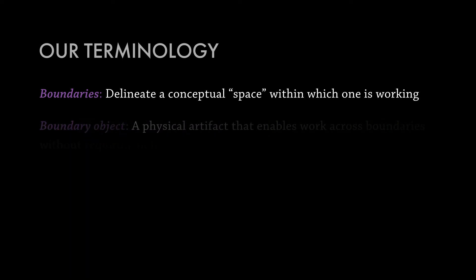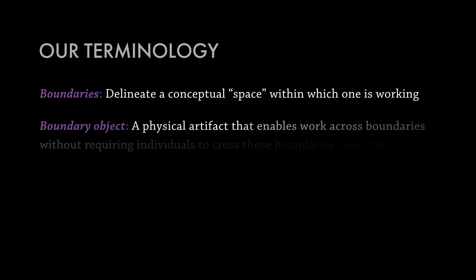A boundary object is a physical artifact that enables work across those boundaries without requiring individuals to cross those boundaries. There's a ton of research that's been happening on boundary objects as these things that allow information to flow across disciplines. But the reality is that that doesn't happen from the beginning. You may be able to build something like that through time. But at first, when you're first starting to work together, there aren't, there are no boundary objects in existence. You have to try to create those.